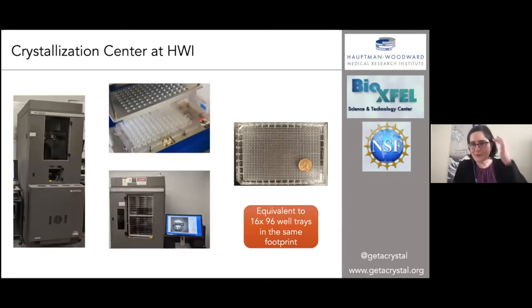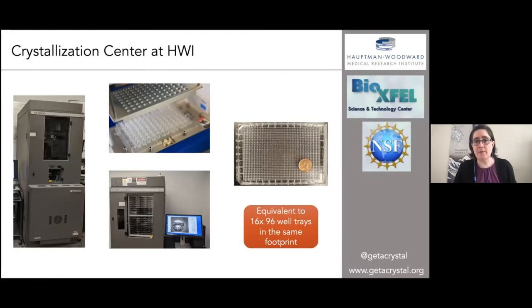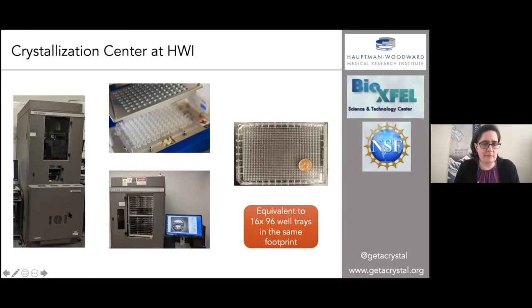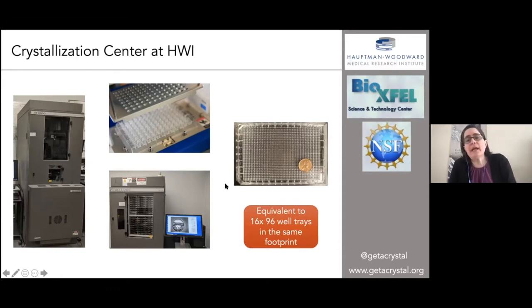We have a variety of robotic systems — 384-syringe, 96-syringe, and 12-syringe drop setters. We also take advantage of a lot of imaging. On the left is our Rock Imager with SONICC, which both Joey and Diana mentioned — SHG imaging. We use that imaging as a matter of course. The SONICC imager is at room temperature, and we also have a Rock Imager mini we call Star Lord, which is at 14 degrees. So we've got a couple of different imagers.